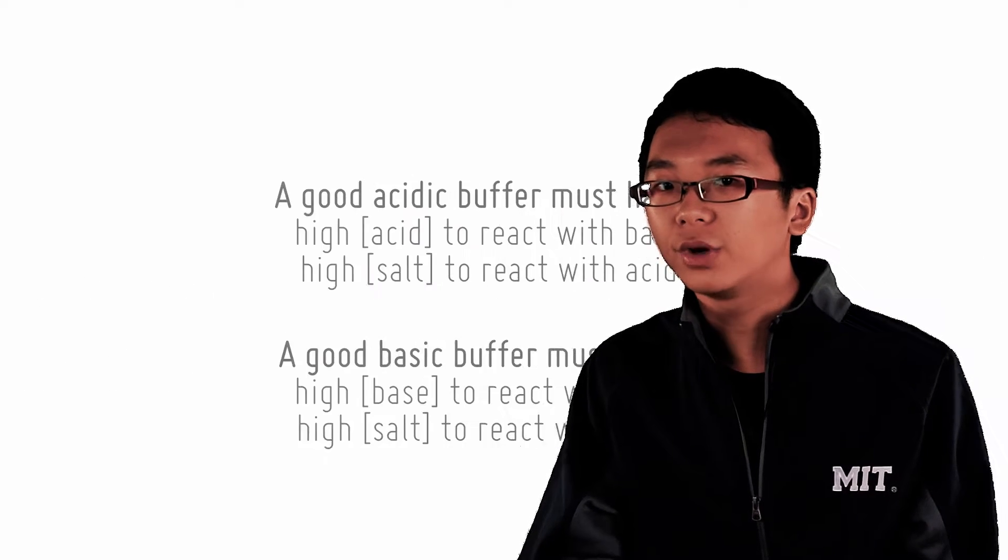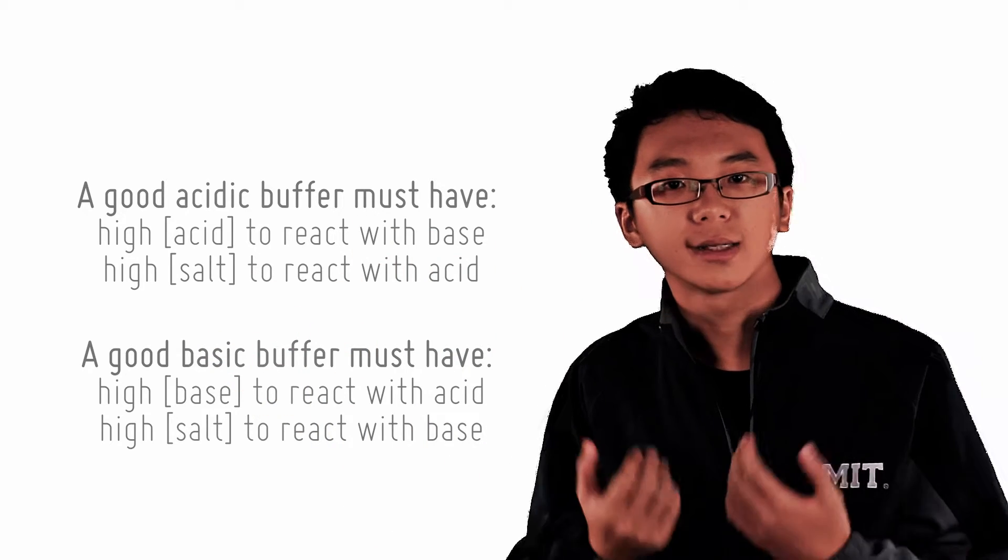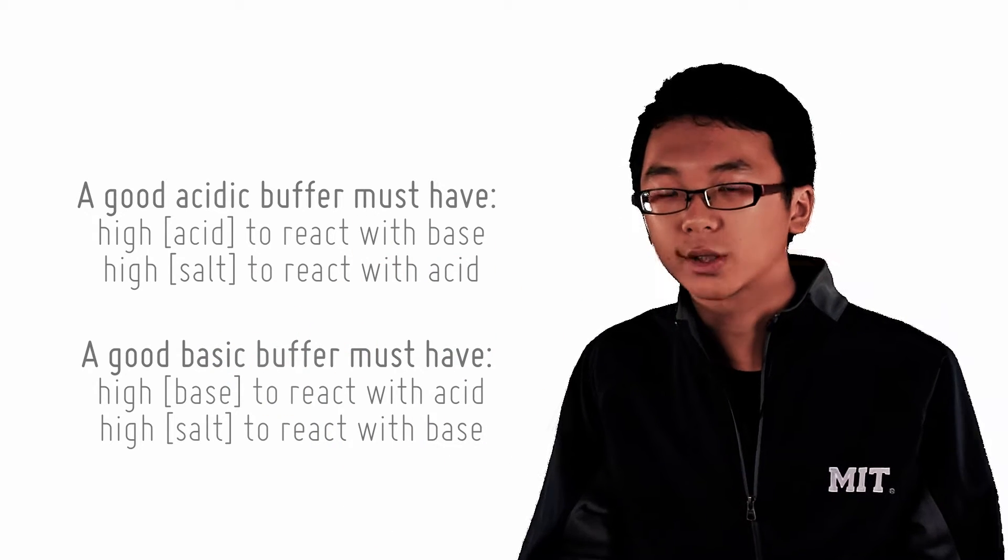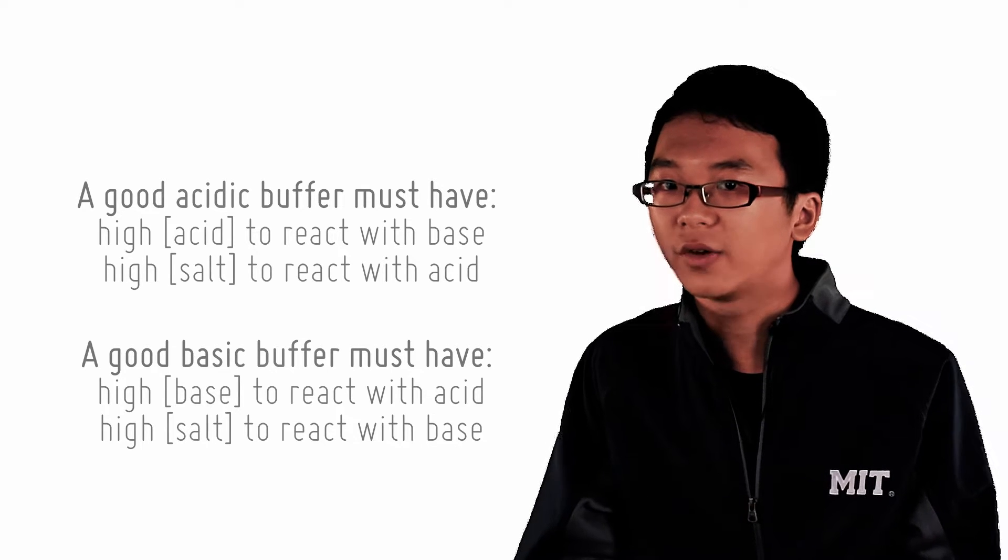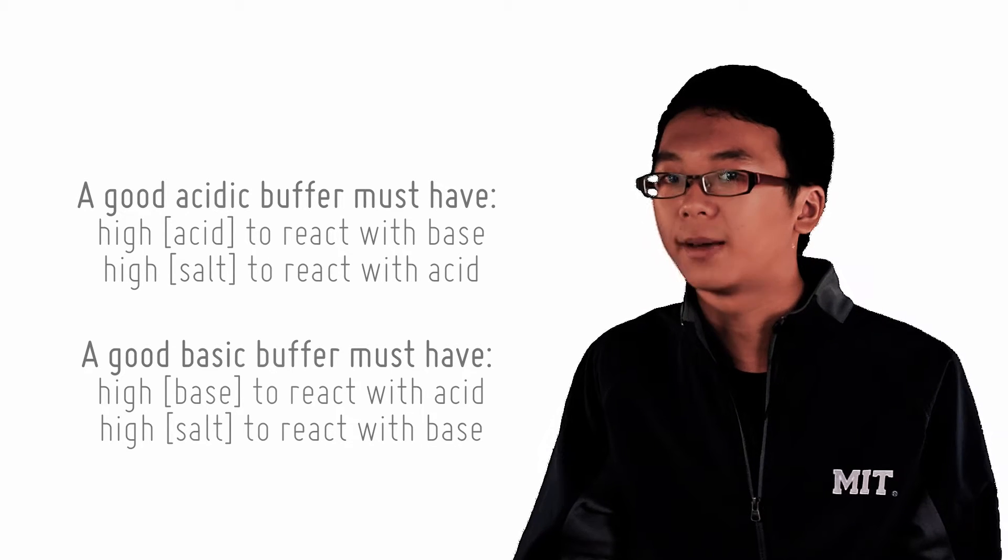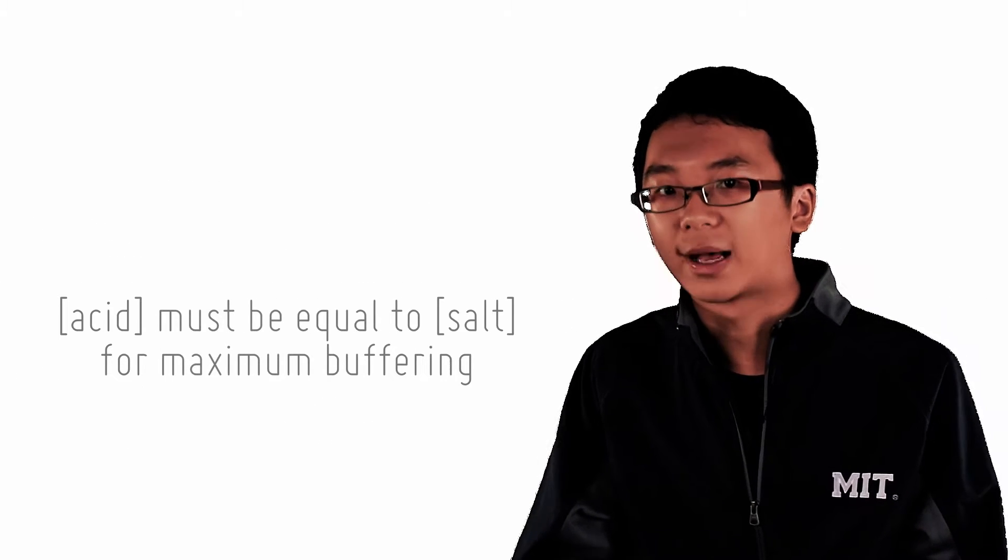So if we want to make a really good buffer that is equally good in buffering both acid and base, we must have a high and equal concentration of the salt and the acid so that it can react with equal amounts of incoming acid and base. We then say that this buffer is at its maximum buffering capacity.